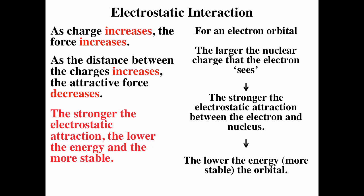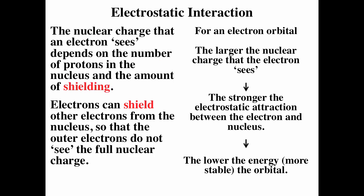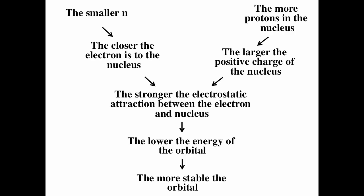The larger the nuclear charge the electron sees, the stronger the electrostatic attraction and the lower the energy. The nuclear charge the electron sees depends on two things: the number of protons in the nucleus — which increases by one going left to right across the periodic table — and shielding. If there is electron density between an electron and the nucleus, the inner electron density shields the outer electron density, so the outer electrons do not see the full nuclear charge.